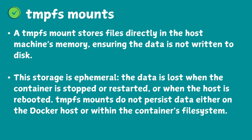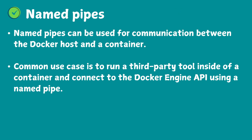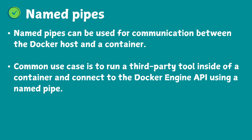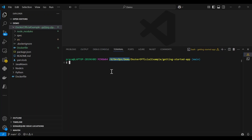There is also a TMPFS mount system where it stores files directly in the host machine's memory, ensuring the data is not written to disk. This storage is ephemeral - the data is lost when the container is stopped or restarted, similar to the basic default option Docker provides. The last one is named pipes, used to enable communication between the Docker host and a container - a common use case is to run a third-party tool inside the container and connect to the Docker Engine API using a named pipe. The important ones for us are volume mount and bind mount, which you will use mostly. Use those whenever you want to persist data.